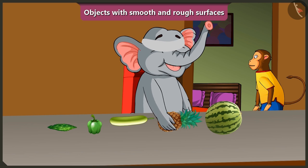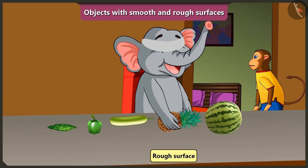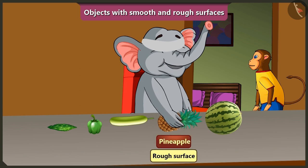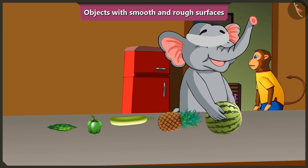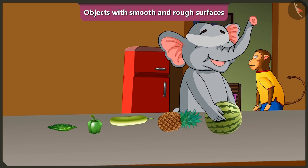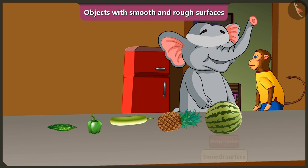My hand is not sliding easily on this surface — this is a pineapple with a rough surface. And my hand is sliding easily on this surface, so this is a watermelon with a smooth surface.